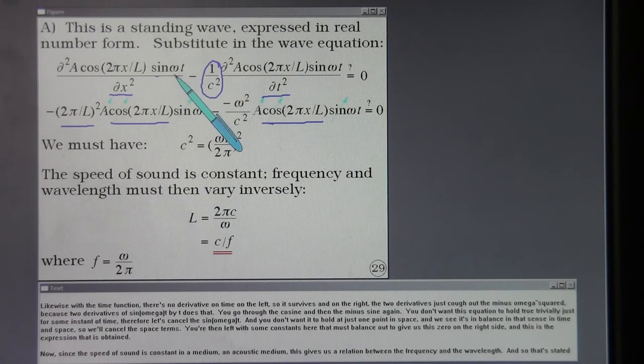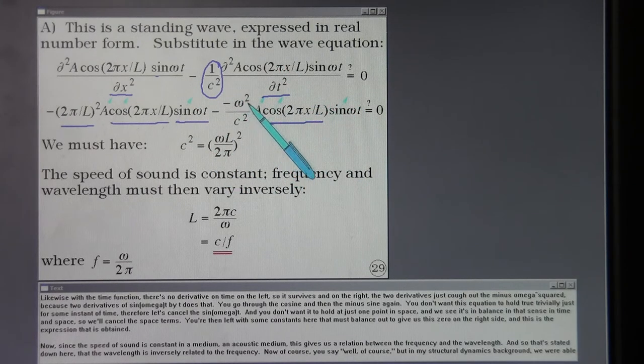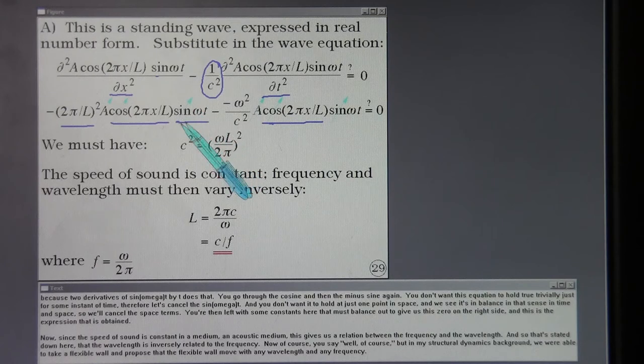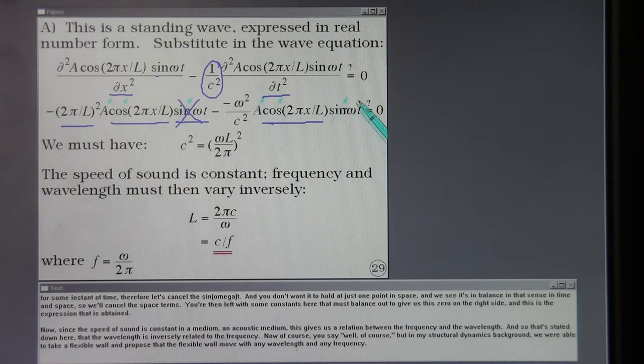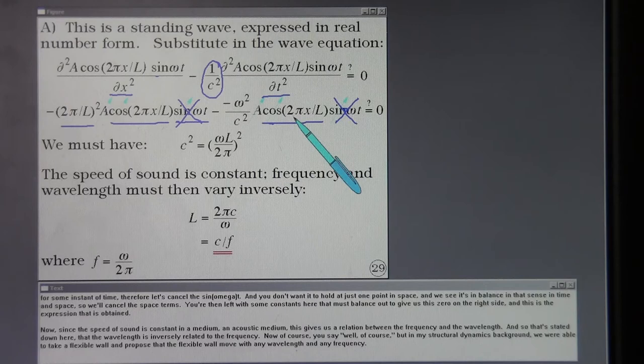Likewise with the time function, there's no derivative on time on the left so it survives. And on the right the two derivatives just cough out the minus omega squared. Because two derivatives of sine omega t by t does that. You don't want this equation to hold true trivially just for some instant of time. Therefore, let's cancel the sine omega t. And you don't want it to hold just at one point in space. And we see it's in balance in that sense both in time and space. So we'll cancel the space terms.